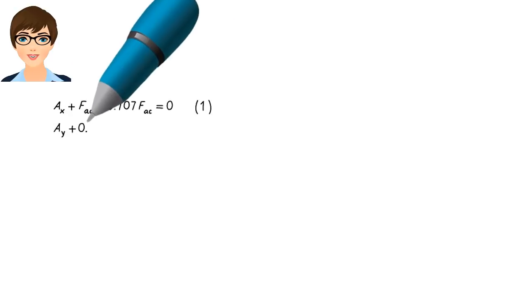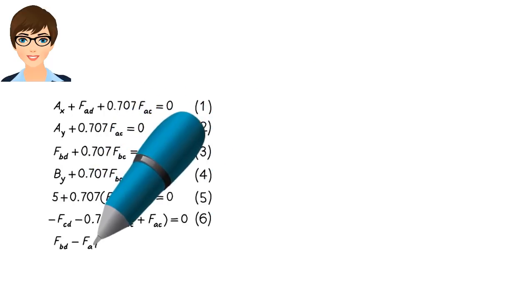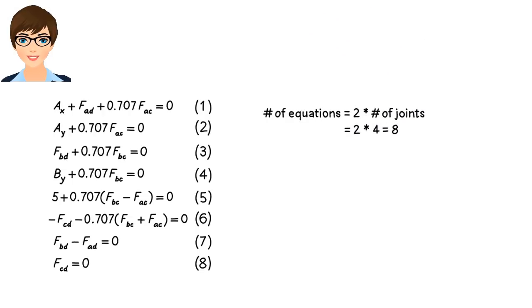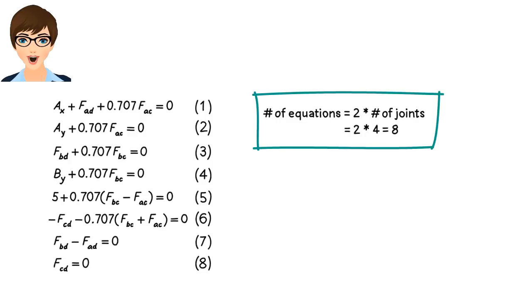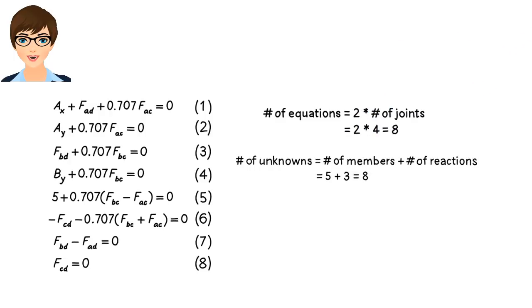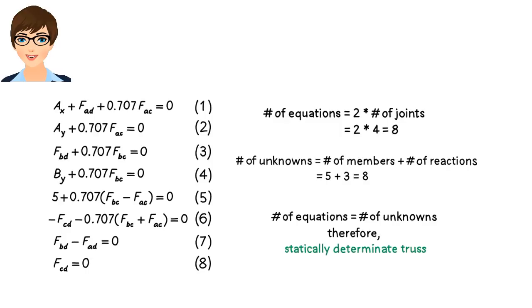So we have 8 equations and 8 unknowns. We formulated 2 equations per truss joint, so the number of equations equals 2 times the number of joints. The truss has 5 unknown member forces and 3 unknown support reactions, giving a total of 8 unknowns. Since the number of equations equals the number of unknowns, we can solve the system — either simultaneously using a standard technique such as Gaussian elimination, or using shortcuts to speed up the calculations.